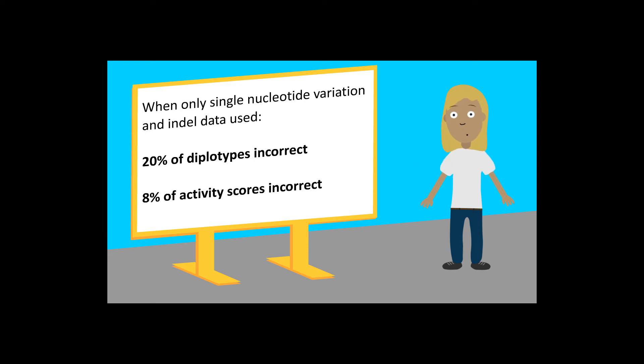If the goal is to be doing precision medicine, incorrect phenotype predictions for 8% of patients isn't good enough.